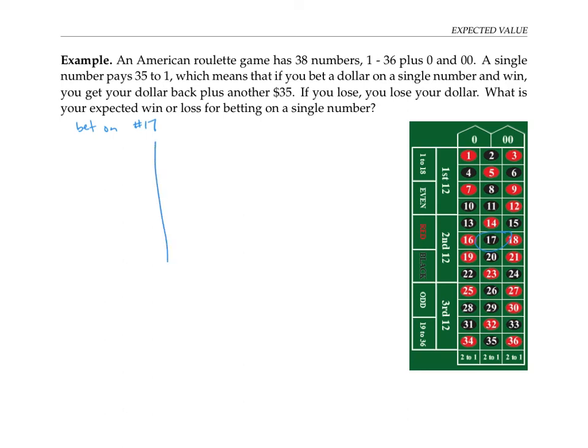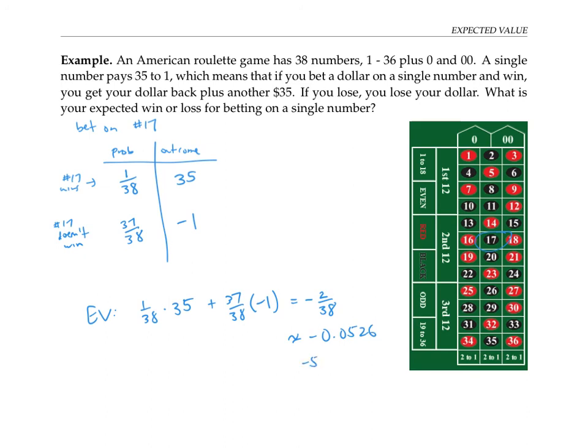So if we chart things out, the chance of the wheel landing on the 17 is only one out of 38. In that case, we gain $35. But the chance that it doesn't land on a 17 is 37 out of 38. In that case, we lose $1. So our expected value is 1/38 times 35 plus 37/38 times negative one. This works out again to negative two over 38, which works out to negative 0.0526 dollars or negative 5.26 cents expected value each time you play.